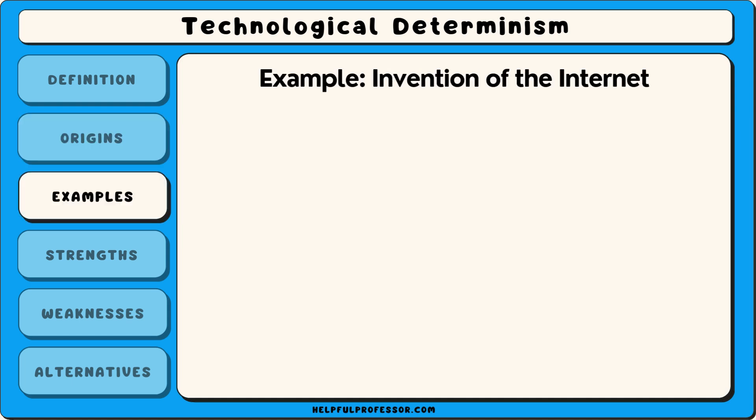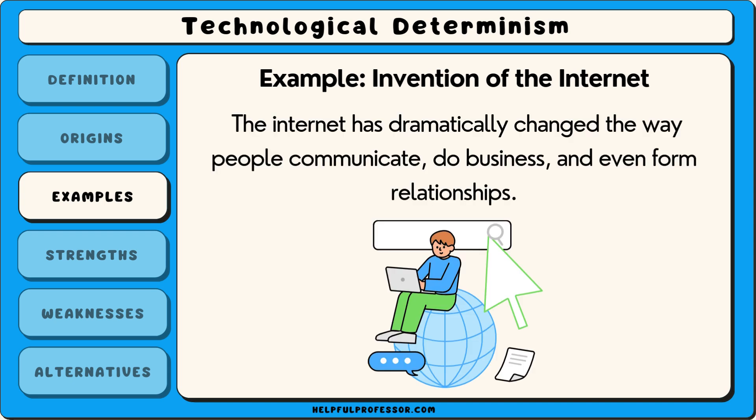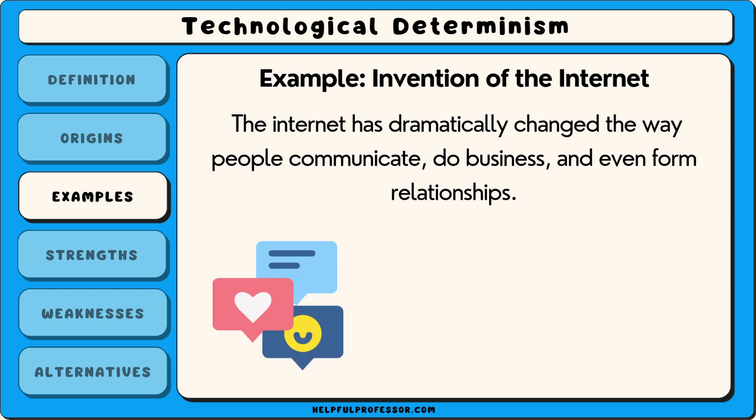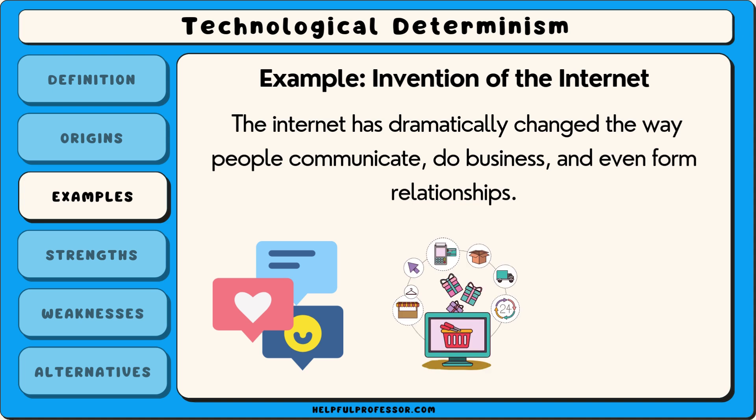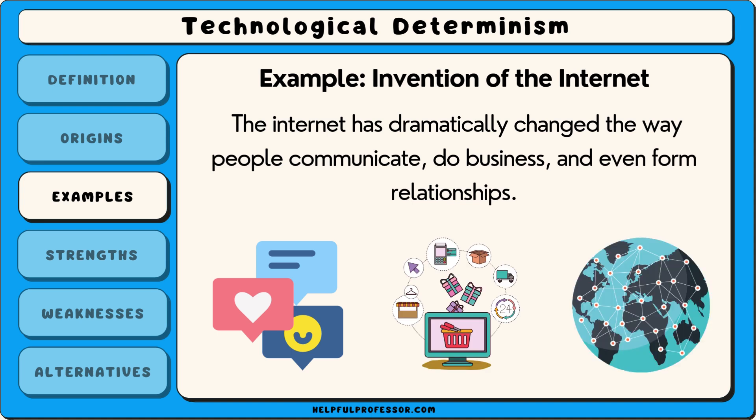An example of technological determinism is the invention of the internet. The internet has dramatically changed the way people communicate, do business and even form relationships. It has led to the rise of social media platforms, e-commerce and instant global communication.